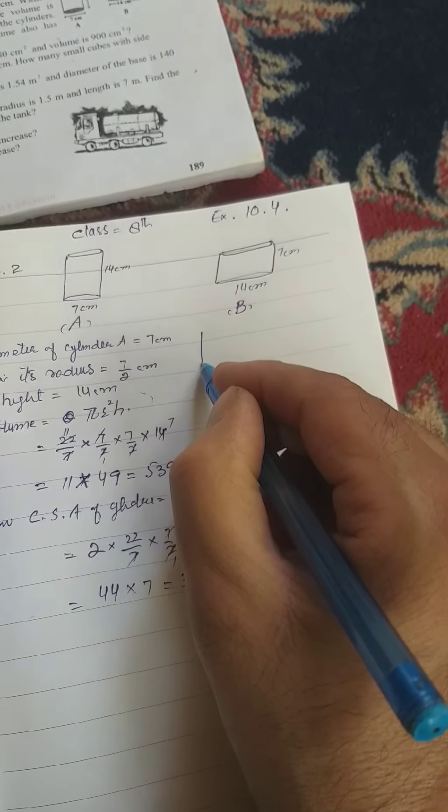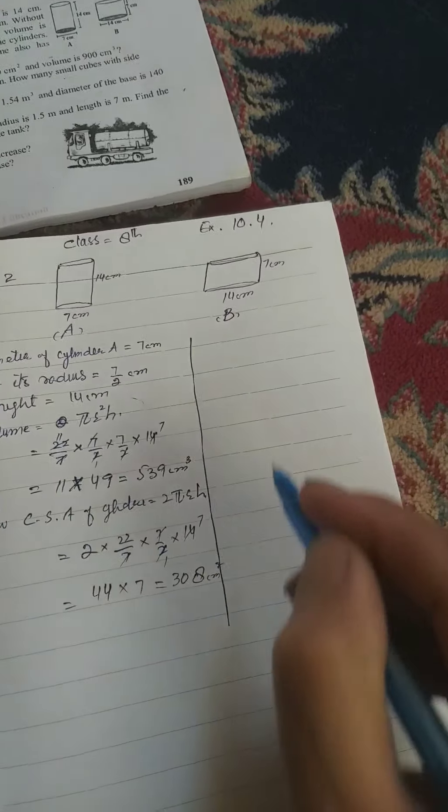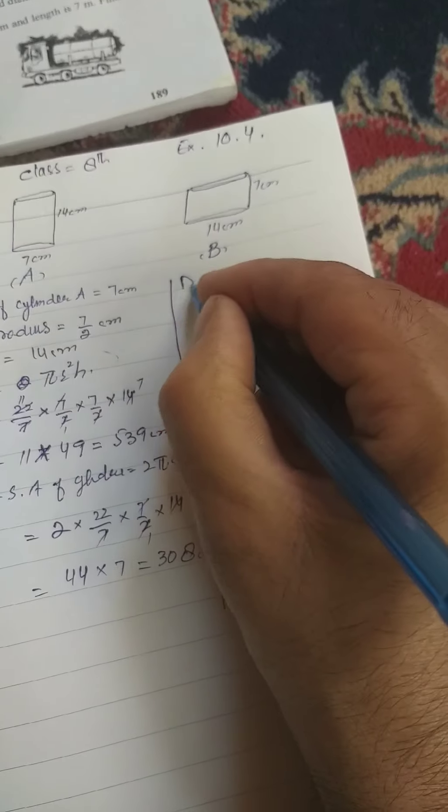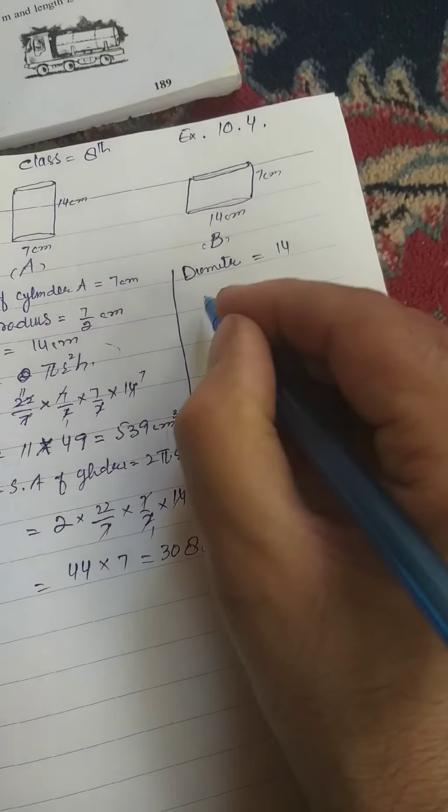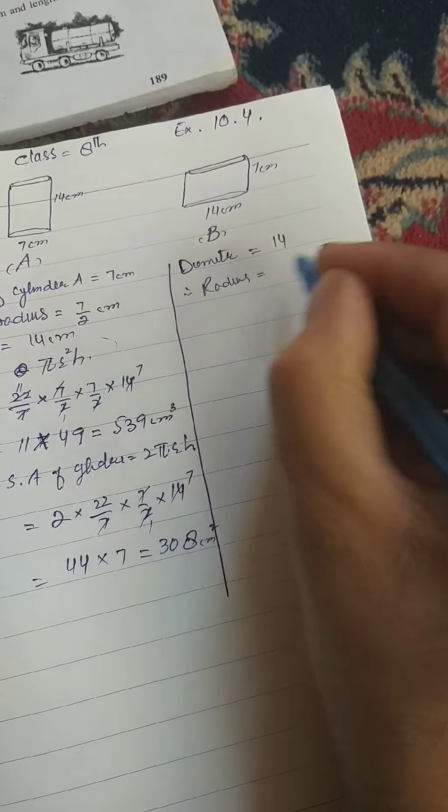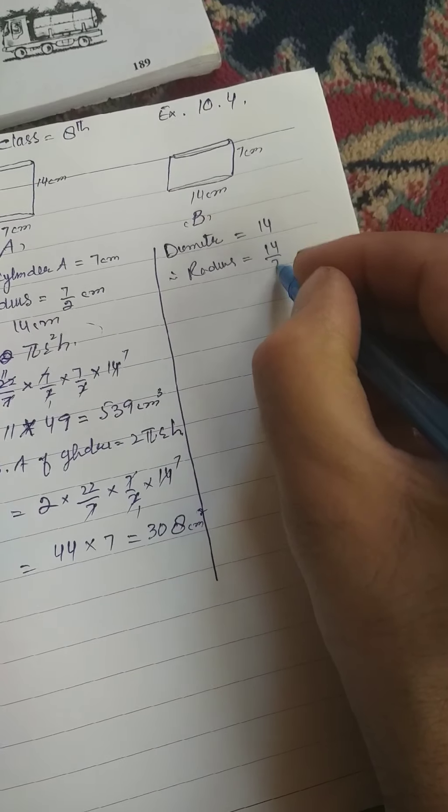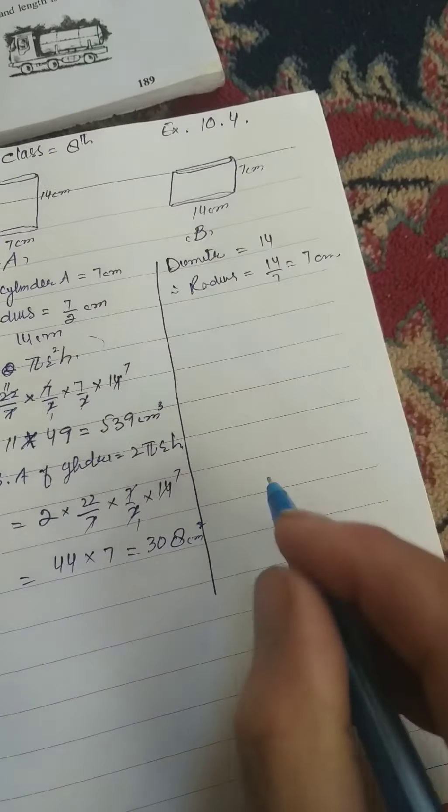Now cylinder B, diameter is 14. Therefore, radius is 14 divided by 2 is equal to 7cm.